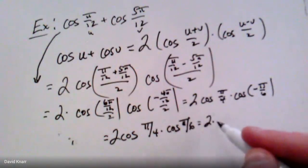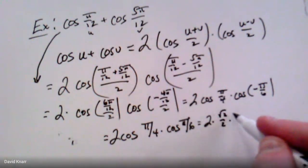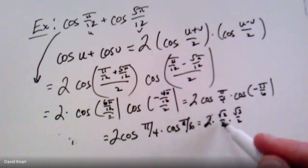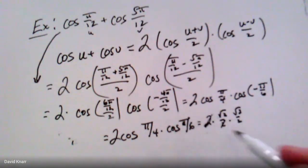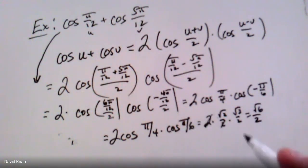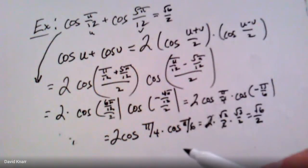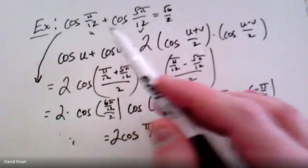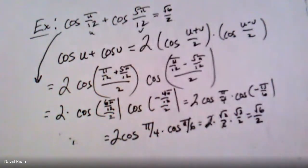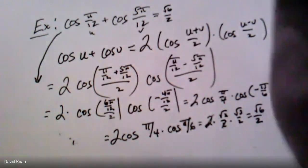Using the unit circle: cos(π/4) = √2/2 and cos(π/6) = √3/2. The 2 out front cancels with one of the 2s in the denominators when multiplying straight across, giving us √6/2. That's the final answer — we found this without ever individually calculating cos(π/12) or cos(5π/12), just by using the sum-to-product formula.